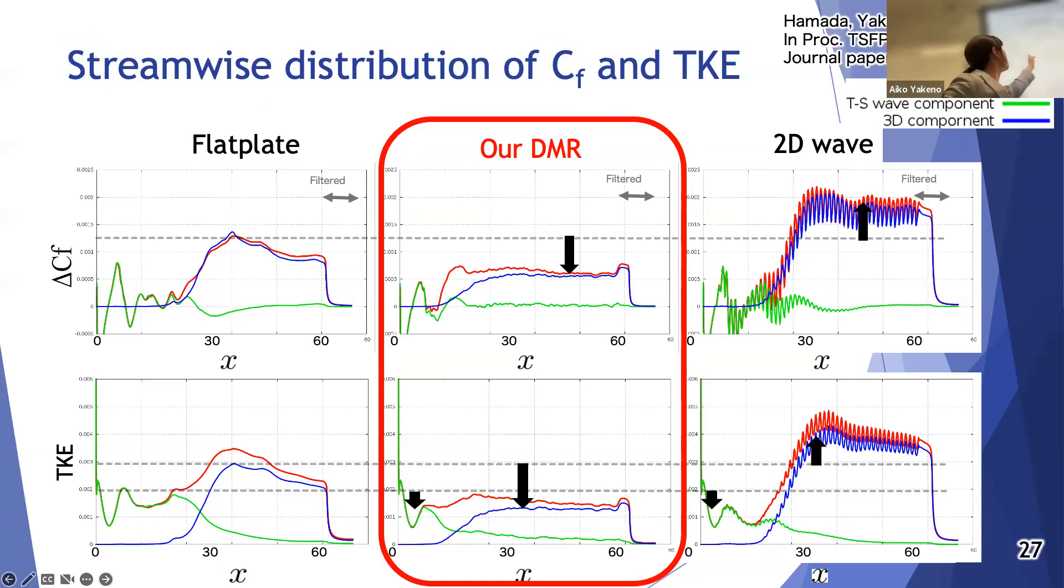Upper figures show the CF gain. Then the below figures are the turbulence kinetic energy. These values are decomposed into a TS wave statistics and other 3D statistics. Compared with flat plate cases, our DMR can reduce the CF and turbulence kinetic energy like this.